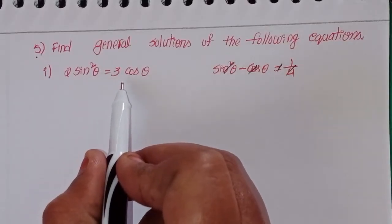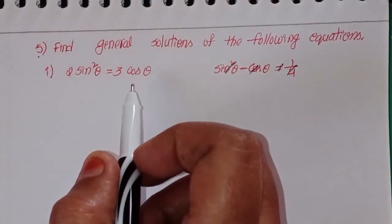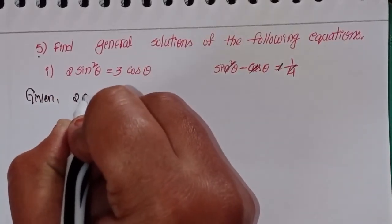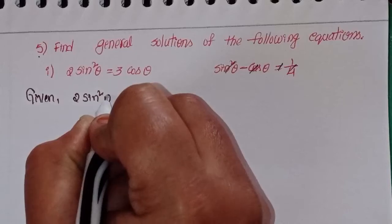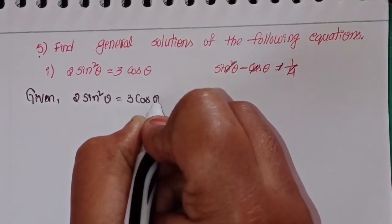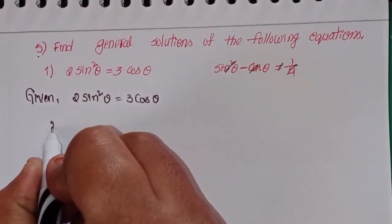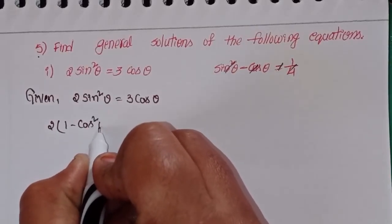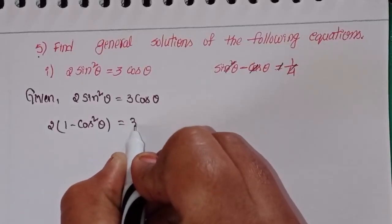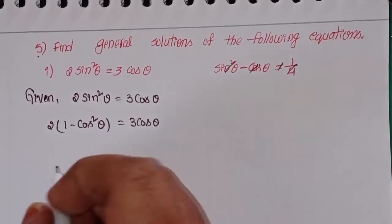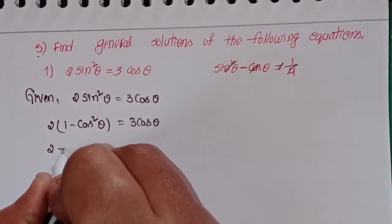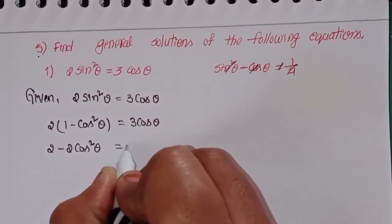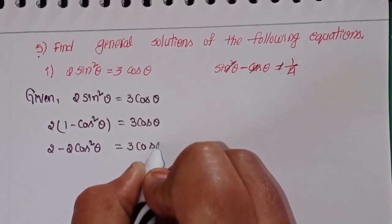First one: given 2 into sin squared theta equal to 3 cos theta. We can write sin squared theta as 1 minus cos squared theta, so 2 into (1 minus cos squared theta) equal to 3 cos theta. Multiplying: 2 minus 2 cos squared theta equal to 3 cos theta.